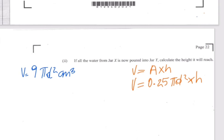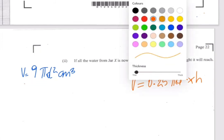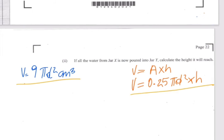The volume of water in jar Y equals the volume of water from jar X because we're pouring from one into the other — they are the same exact volume. So we equate both volumes: 9πd² equals 0.25πd² times h.